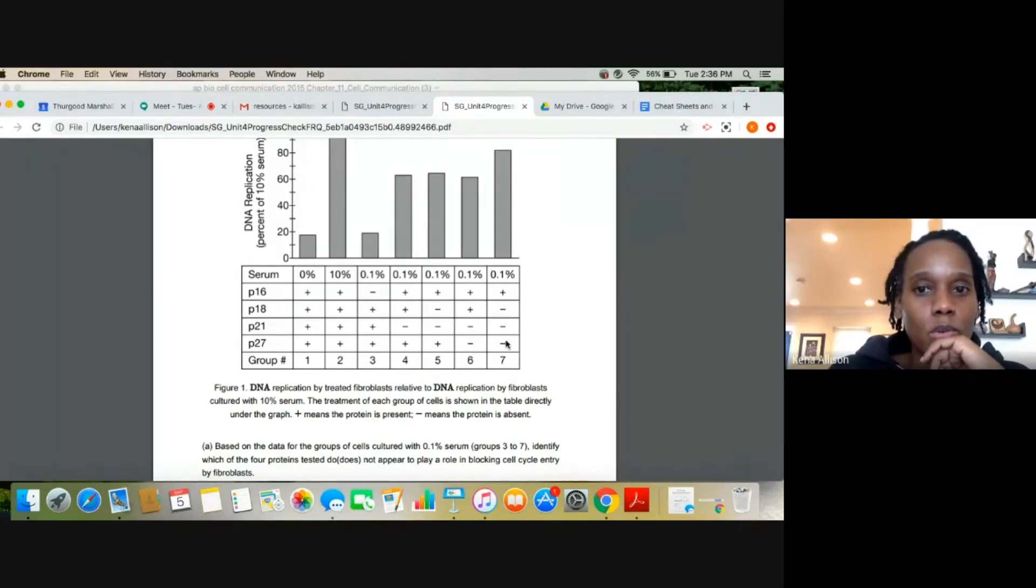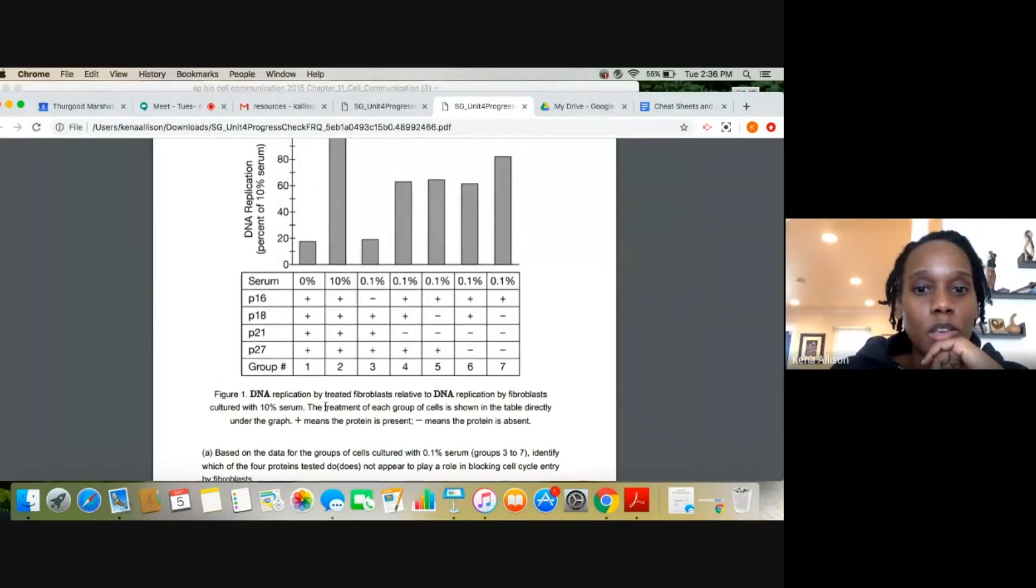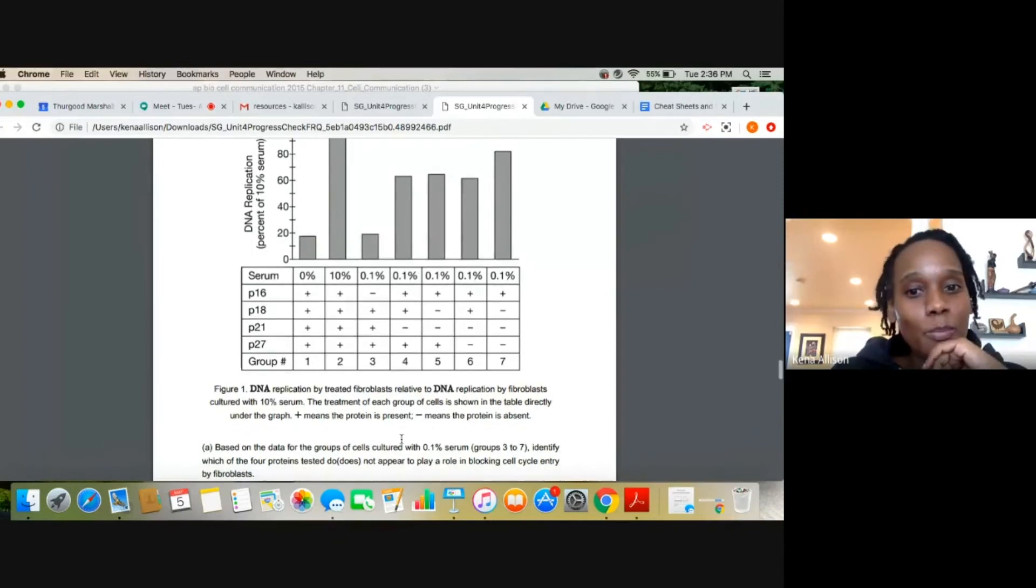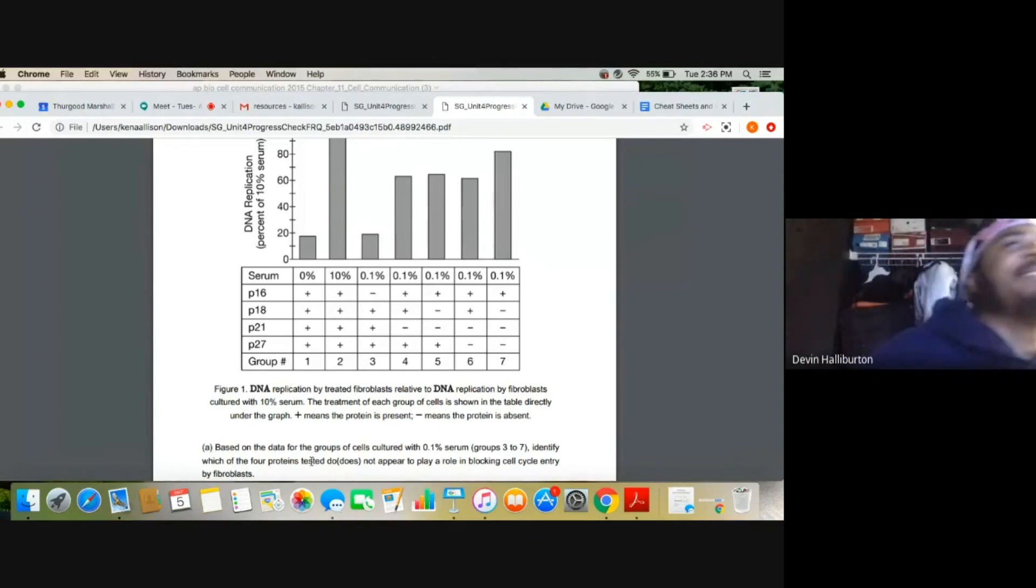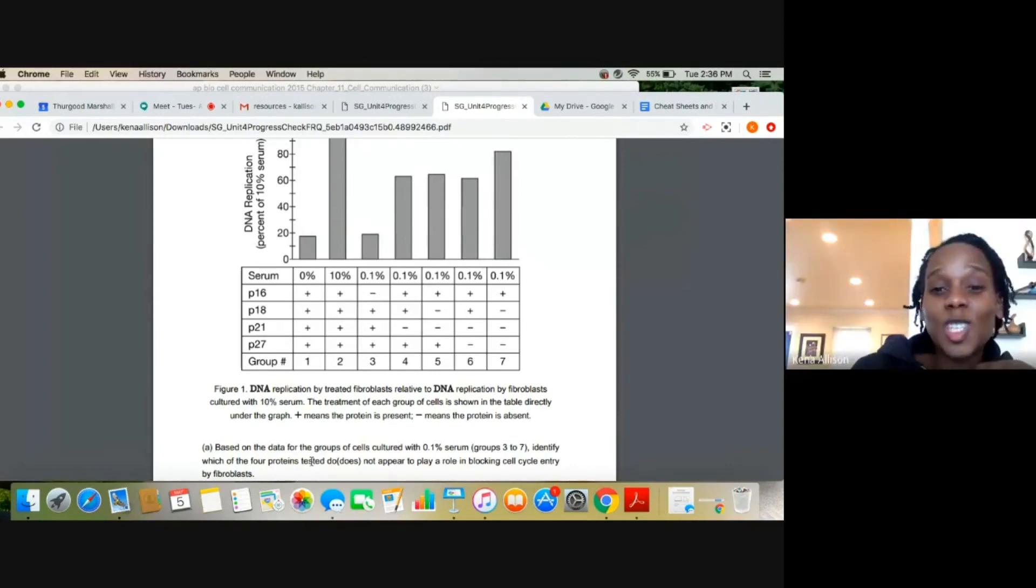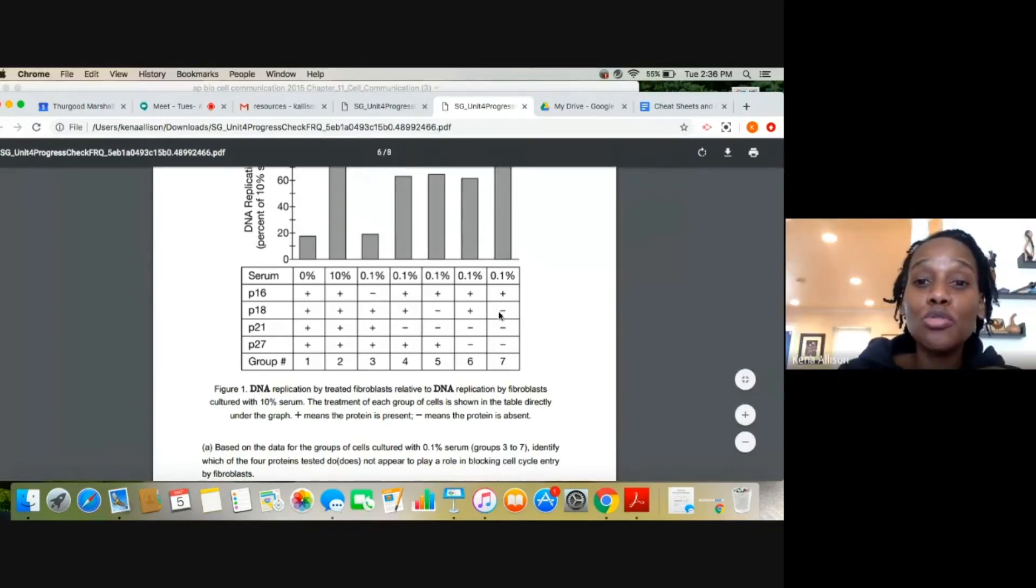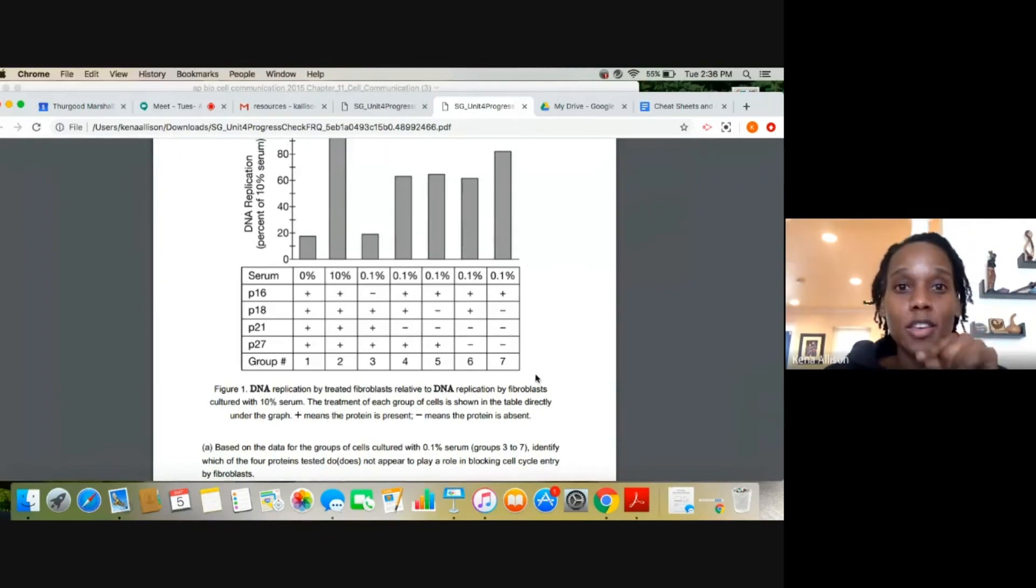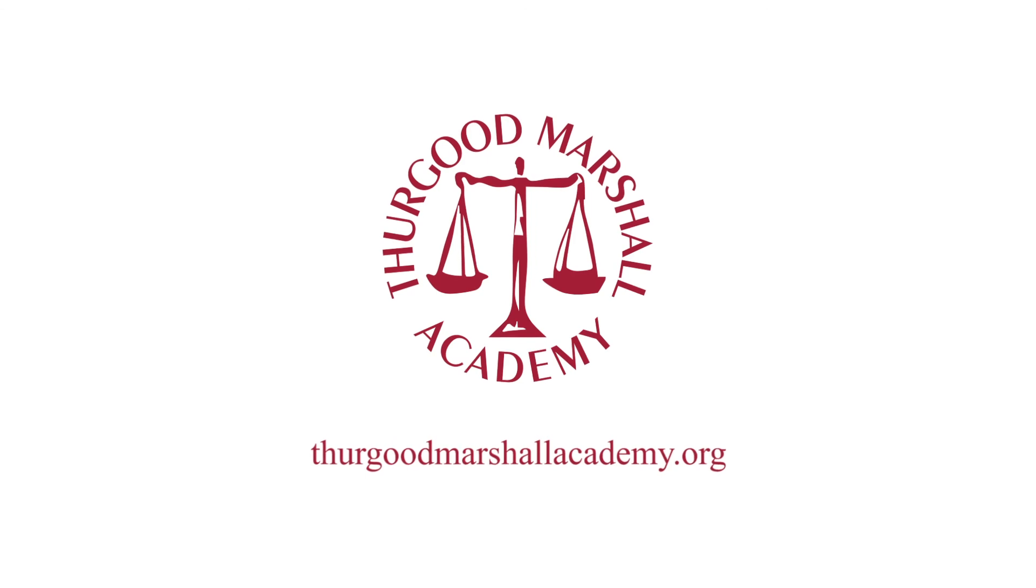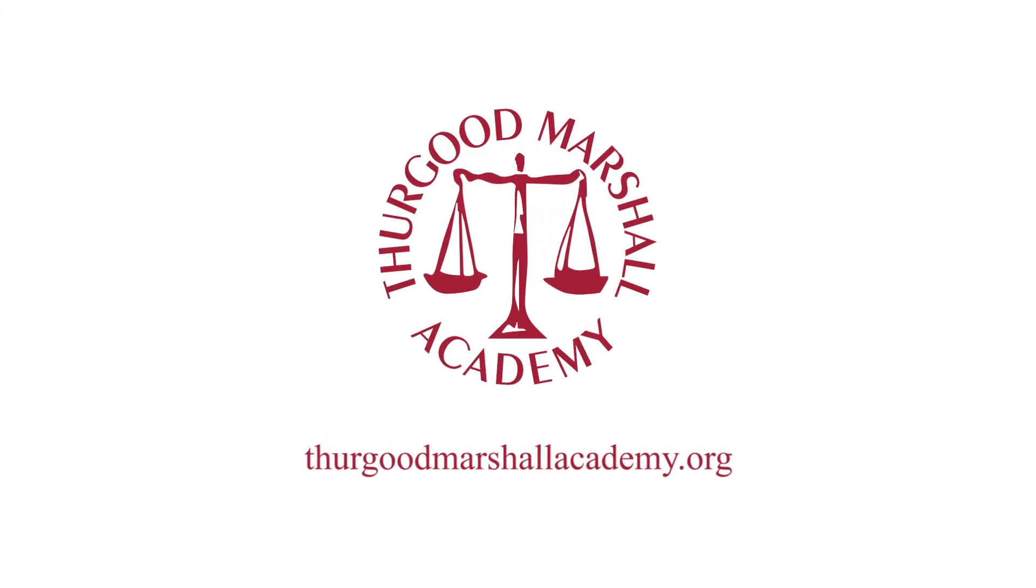You were on to something, but the problem is that the question asks you which of the four proteins. Oh, P16. I did say that. I said that. P16, my bad. Okay. So P16 would be the answer and you could use group seven as support. Okay. Good, Devin. Good, Devin.